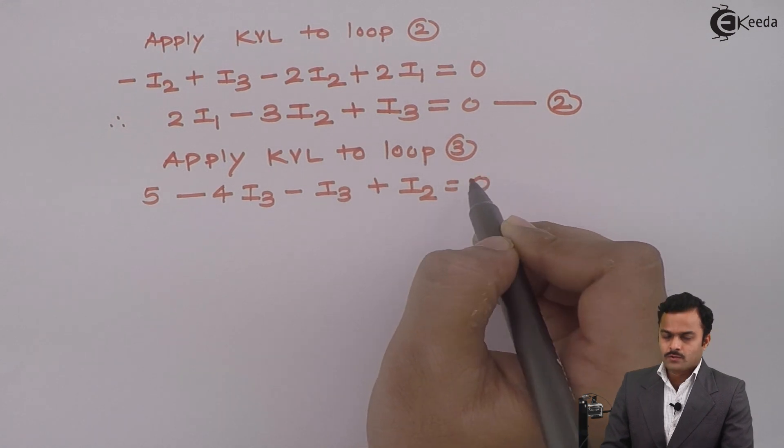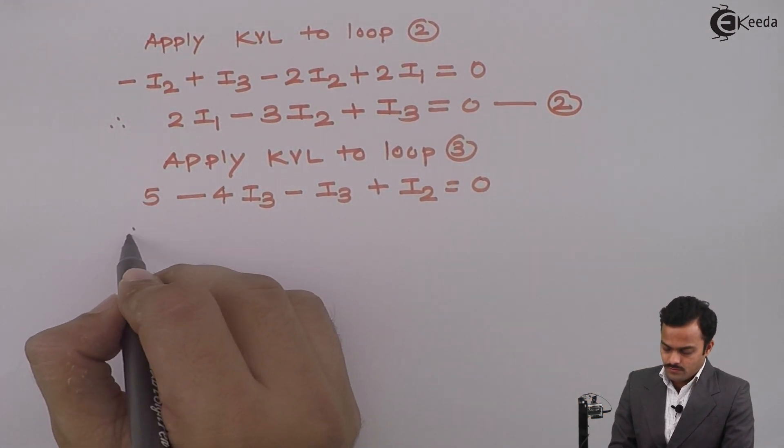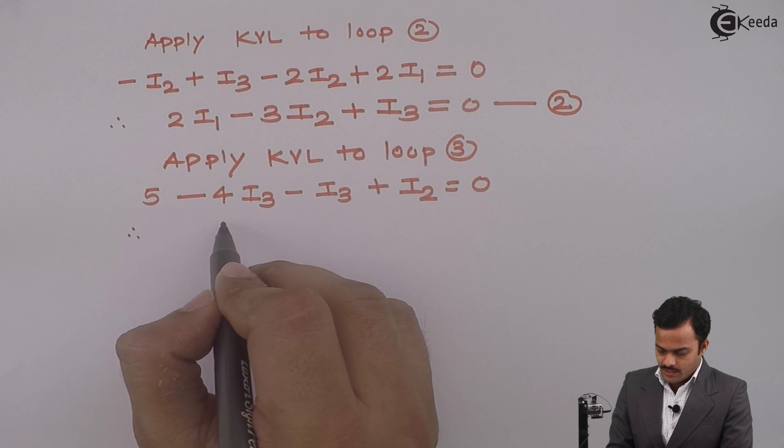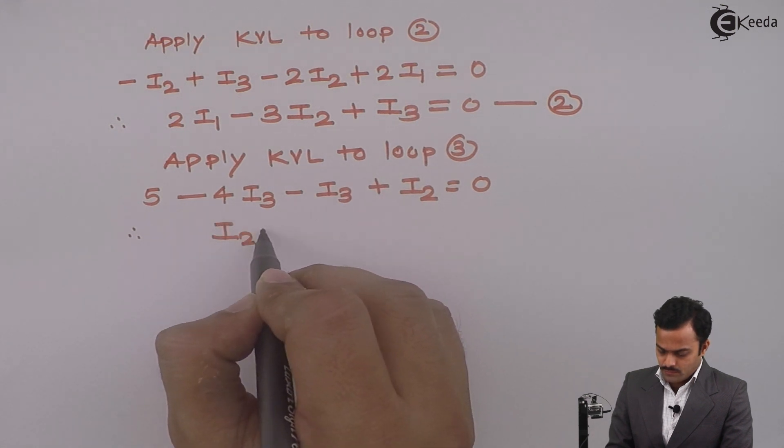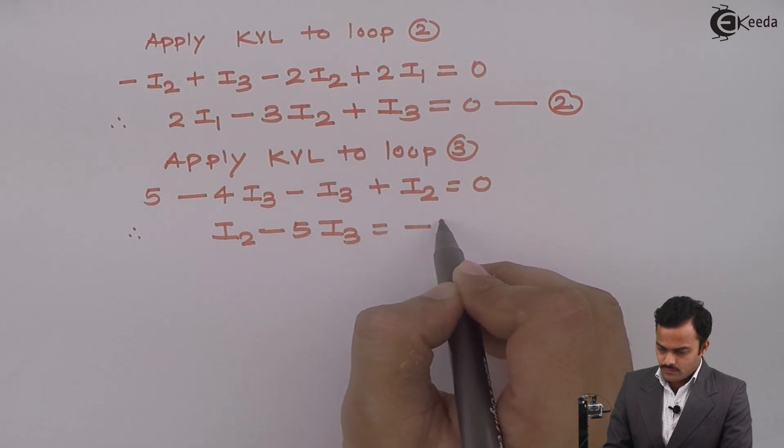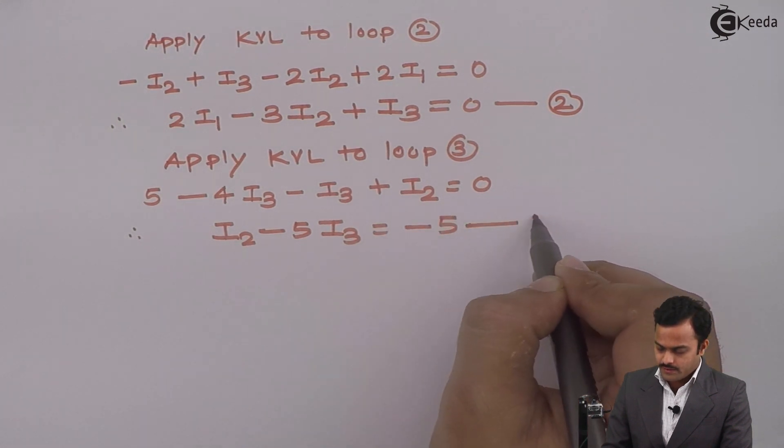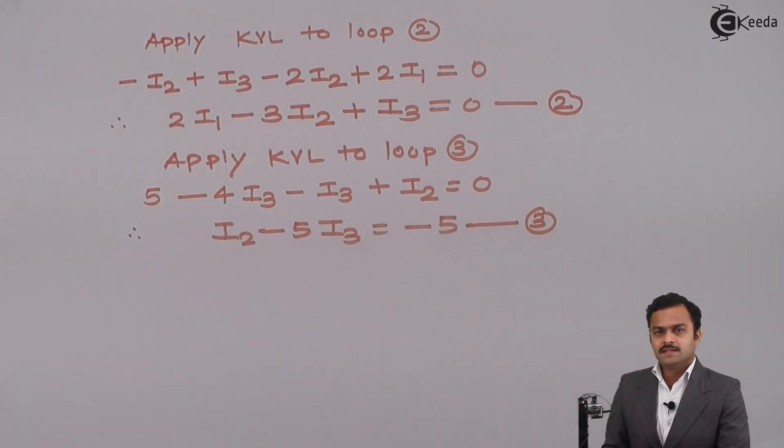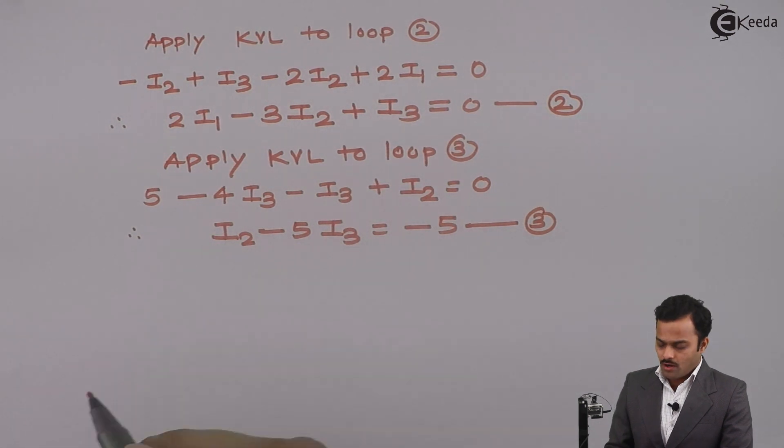So if I simplify, I will get I2 minus 5I3 equals minus 5. This is equation number 3.